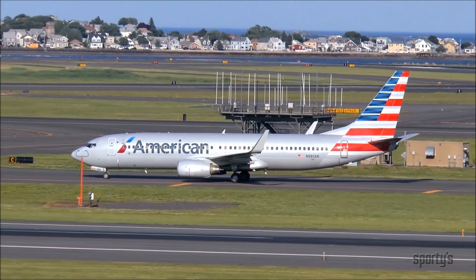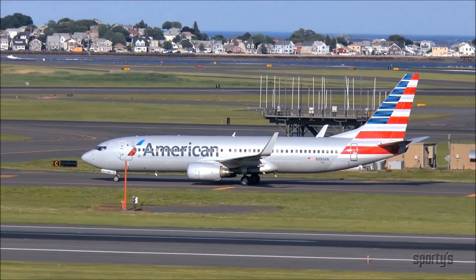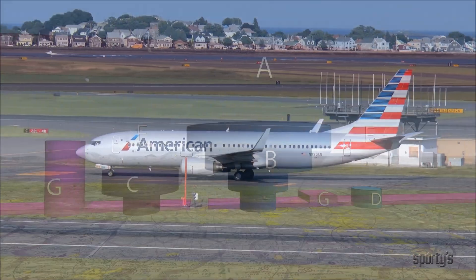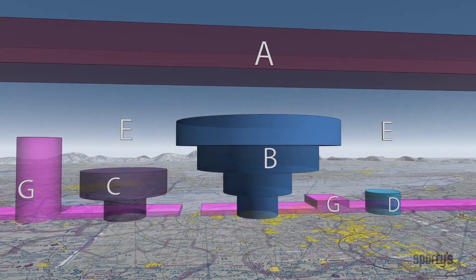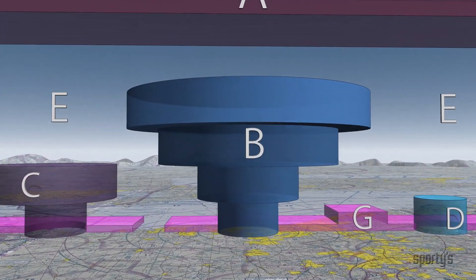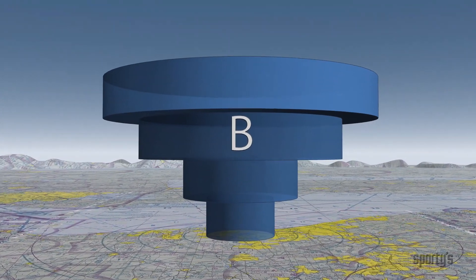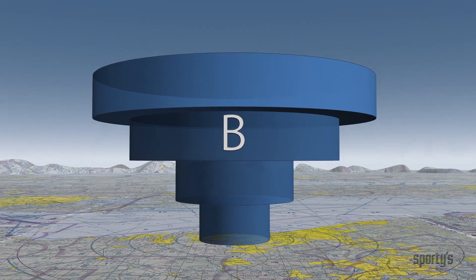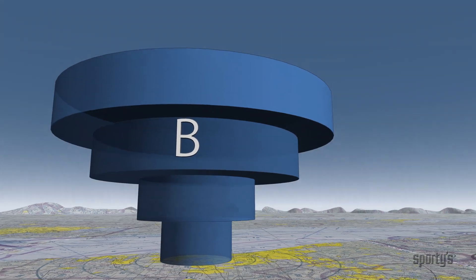Located around airports where there's a large volume of air traffic, Class B airspace, often compared to an upside-down wedding cake in shape, begins at the surface and extends upward to a designated altitude, typically 10,000 feet.